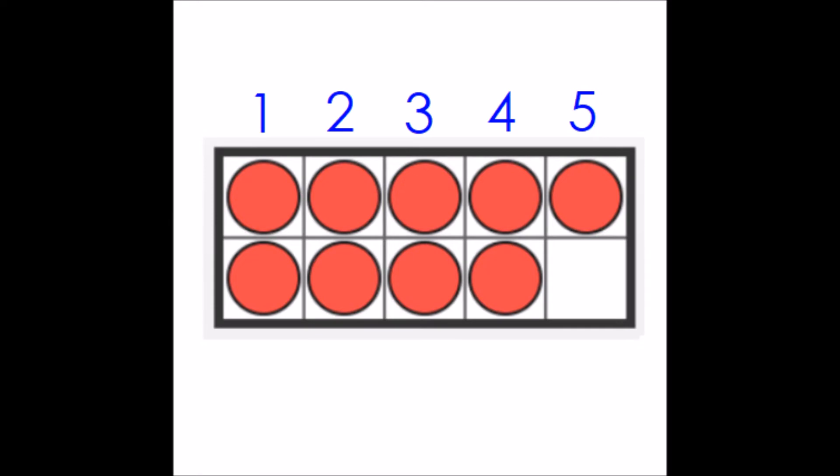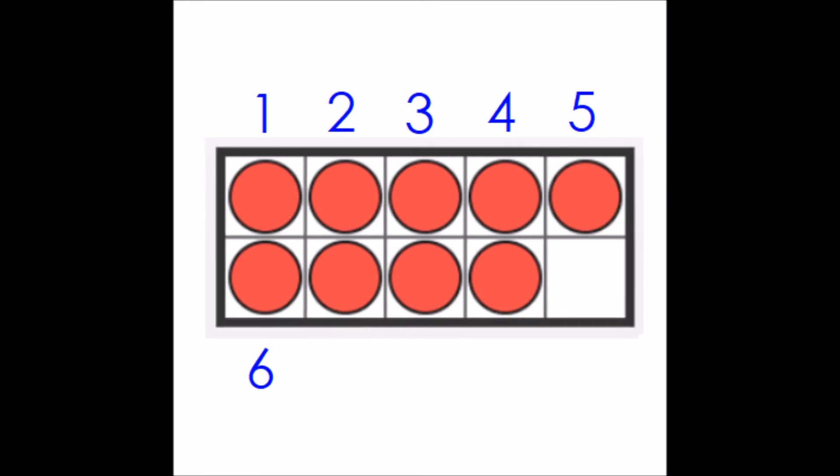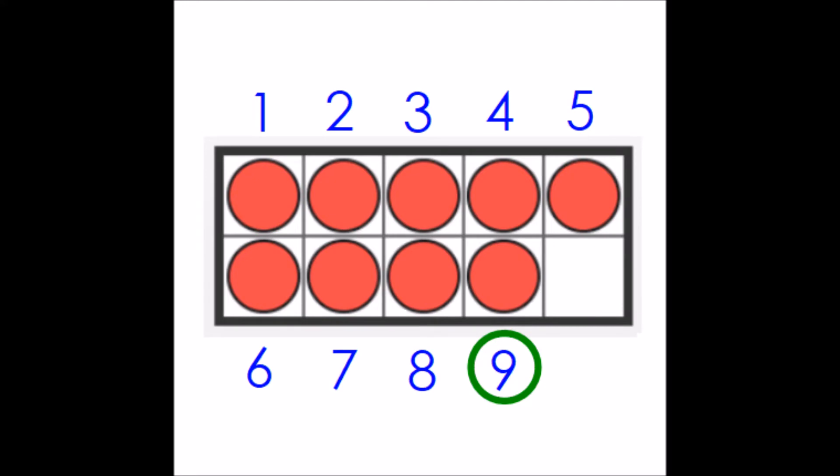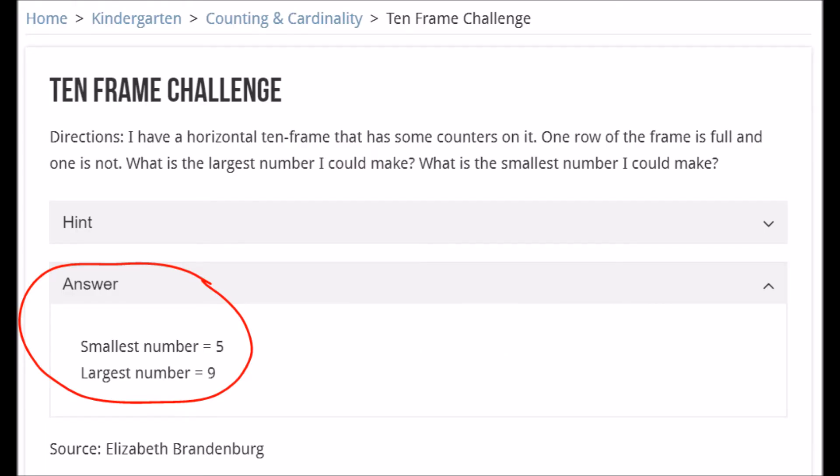What's the largest number I can make? Let's count. We know the top row is five. Let's count on from the bottom. Six, seven, eight, nine. The largest number I can make is nine. And if we go back and check in our website, yep, there we go. It says answer, smallest number five, the largest number nine.